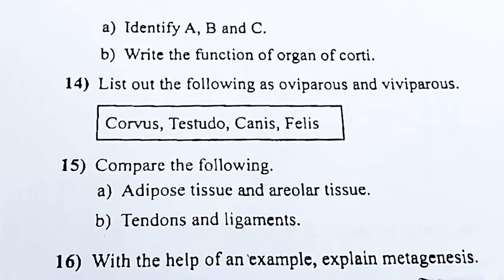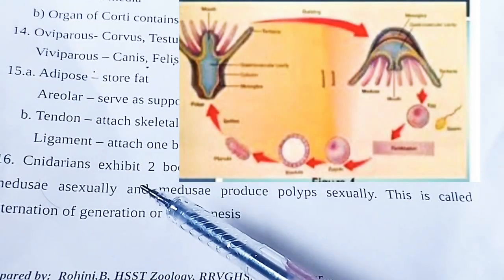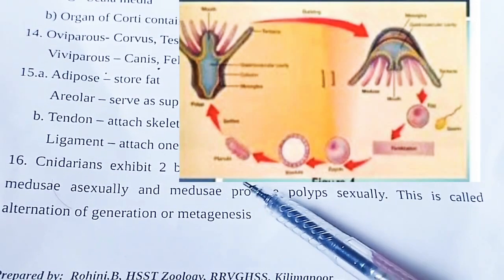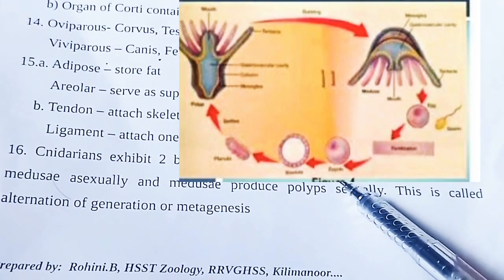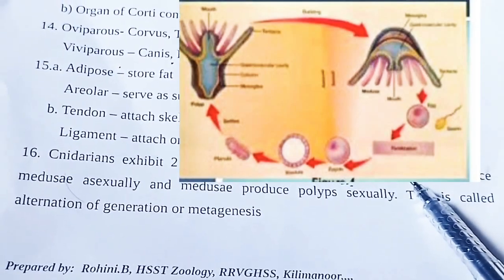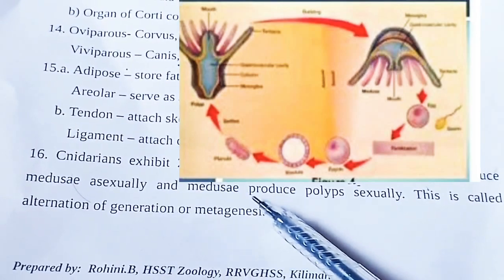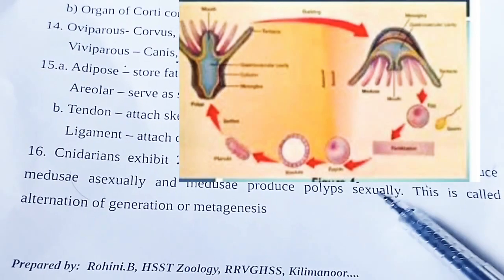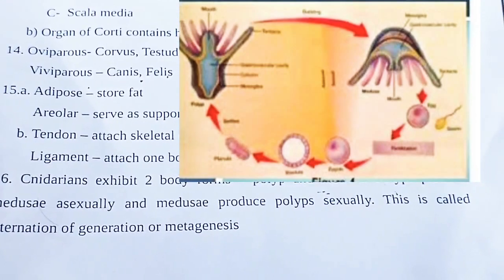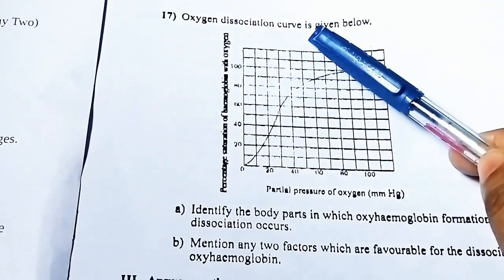Explain metagenesis with an example. Cnidarians exhibit two body forms: polyp and medusa. Polyps produce medusa asexually, and medusa produce polyps sexually. This alternation of generation is called metagenesis.